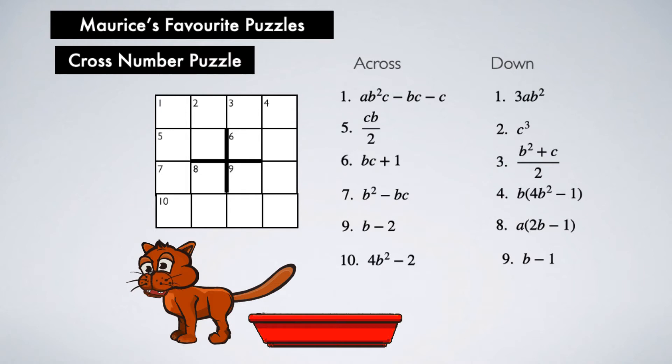Here is the clue then. Just to start you off, look at 2 down. This clue says that the answer to 2 down is c³, but the answer is a two-digit number. There are only two possible numbers.